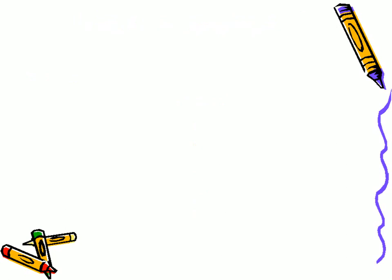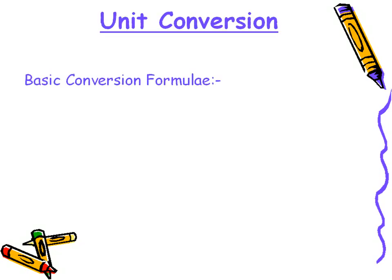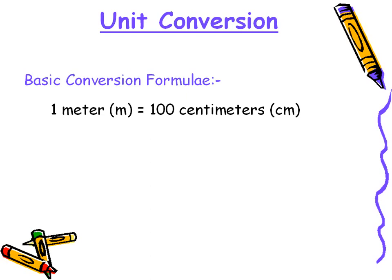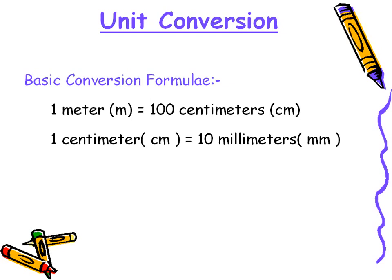We shall now learn some basic formulae for unit conversions. One meter is equal to one hundred centimeters. One centimeter is equal to ten millimeters. And one meter is equal to one thousand millimeters.